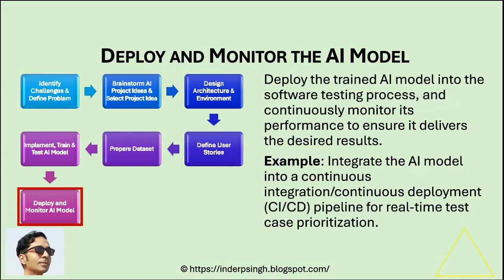Phase 7: Deploy and monitor the AI model. Finally, deploy the trained AI model into your software testing lifecycle and continuously monitor its performance to determine if it delivers the desired results. For example, integrate the AI model into a continuous integration/continuous deployment (CI/CD) pipeline for real-time test case prioritization.